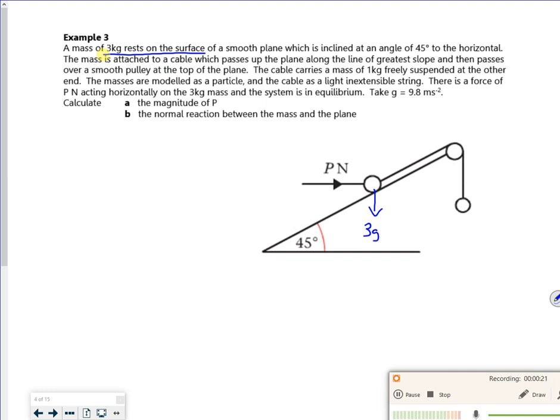So that's 3g. So that's a 45 degree angle isn't it? So we've got like the 3g acting down and we've got 45 degrees. So we've got 3g cos 45 and we've got 3g sin 45.